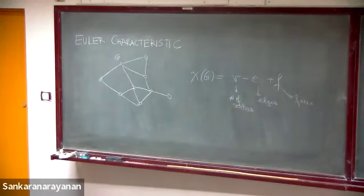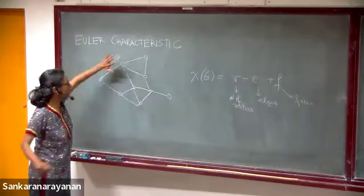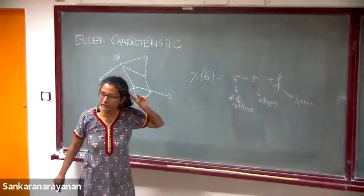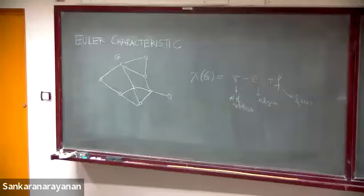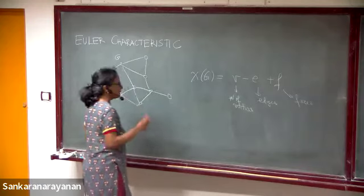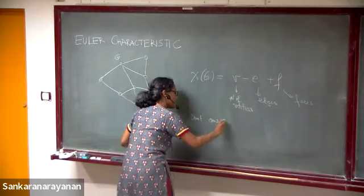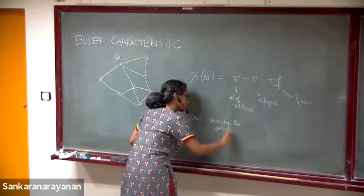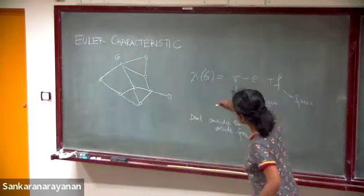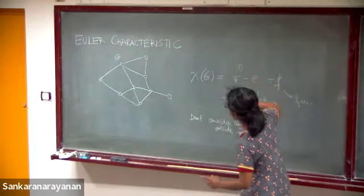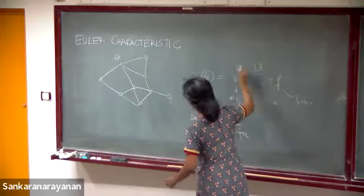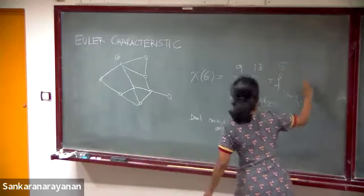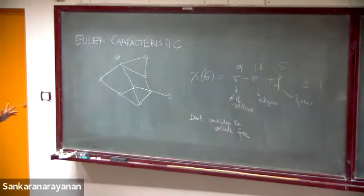What is the answer for this? I guess you're also considering the outside face. So just for the time being, let's start by not considering the outside face. So we have how many vertices? One, two... nine vertices. Number of edges? And five faces. So you get one. You're all comfortable with the fact that the answer is always one if you don't count the outside face.